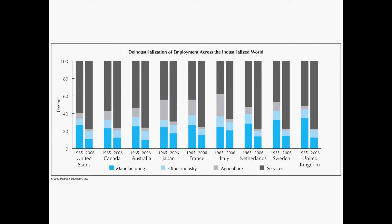The same trend occurred in other developed countries. This slide shows several developed countries — Canada, Australia, Japan, France, Italy, Netherlands, Sweden, and the United Kingdom. In all these countries, manufacturing employment (shown in blue) declined from 1965 to 2006 in terms of percentage, and that decline was replaced by increasing employment in the service sector. The same trend occurred across all developed countries.